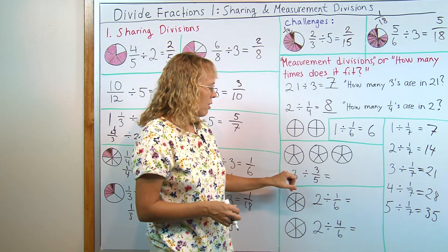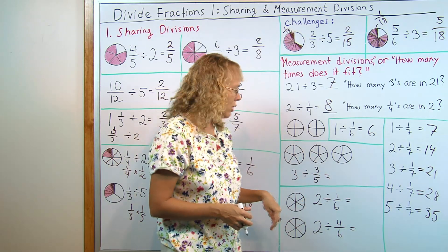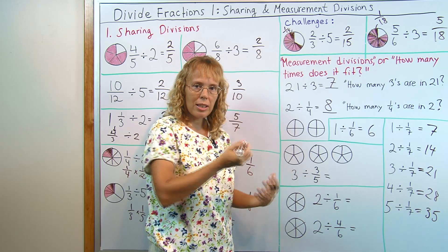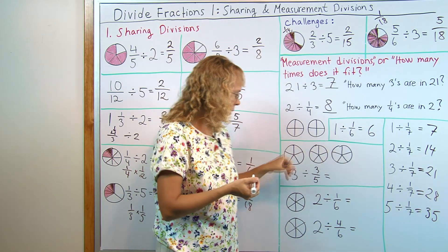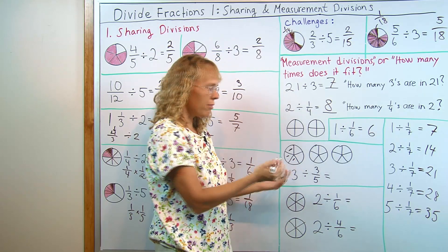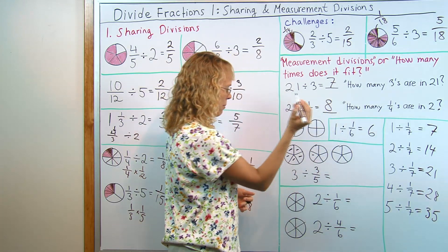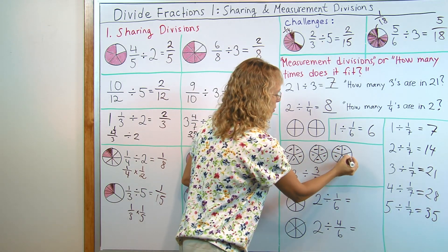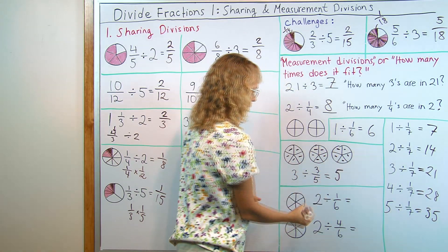A few more. Three divided by three-fifths. You can think this way. Three-fifths. I'll just count how many times I can get three-fifths out of this here. I have my three pies here. And so, here's one time three-fifths. Second time. Third time. Fourth time. And fifth time. So, five times.